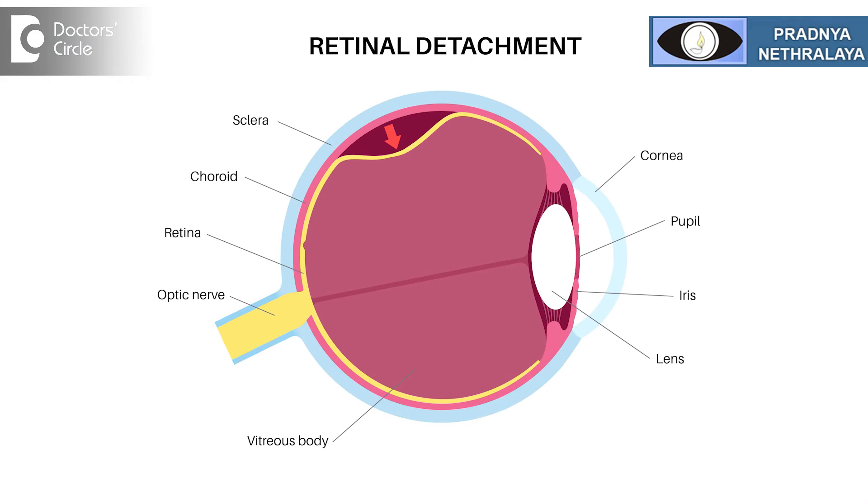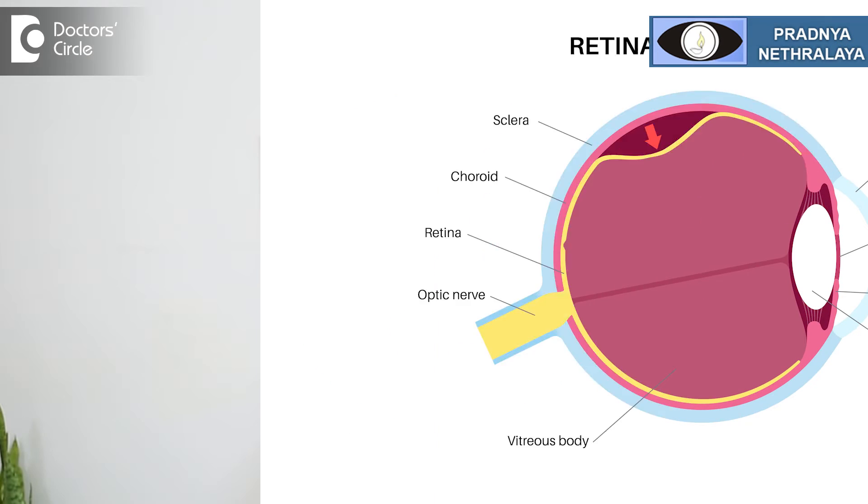The causes of these dark curtains are various. Maybe one of the most dreaded is a retinal detachment, where the retina gets slightly detached from the underlying structures and causes a dark curtain to appear in front of the eye.